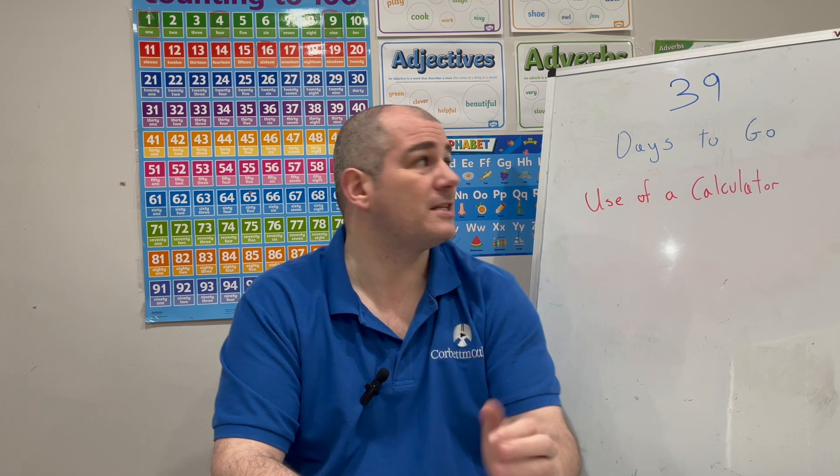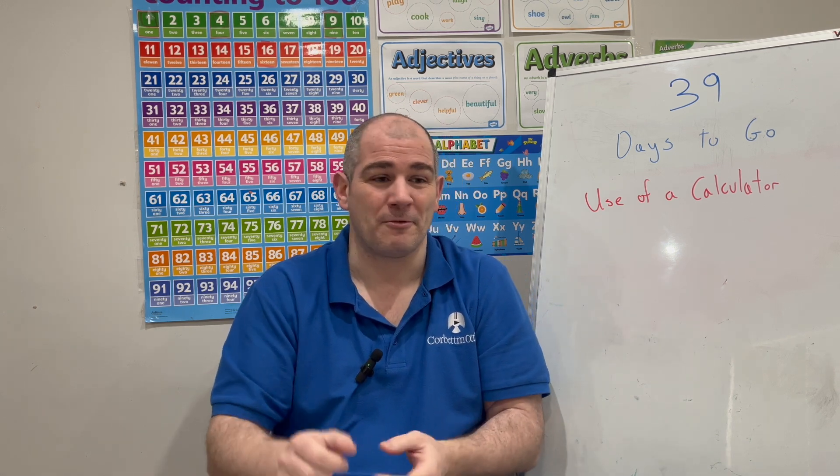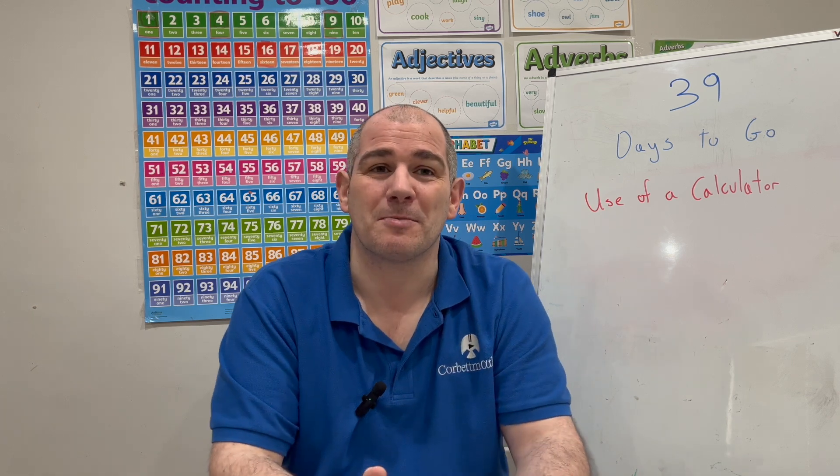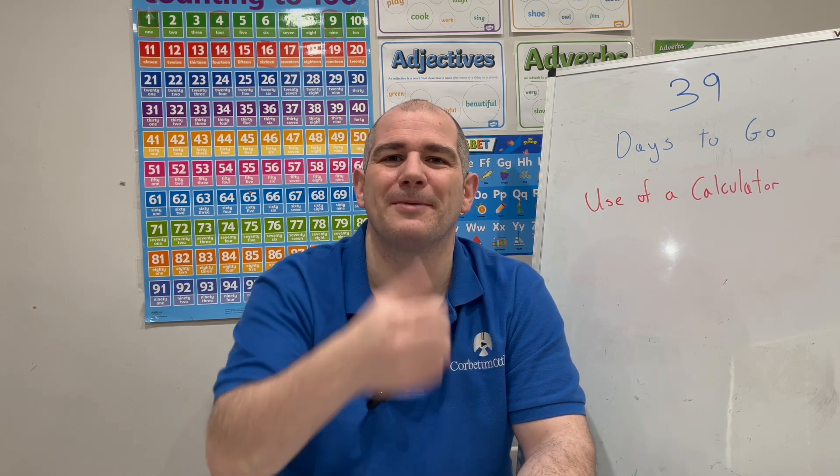In this video we've gone through the use of a calculator. With 39 days to go to your GCSE MAPS exam, it's important to bring your calculator to all your lessons and make sure you have it for past papers. I'd recommend having two calculators so you've got a spare in case one breaks. Make sure you're organised and prepared. Keep up the hard work, and I'll see you tomorrow for 38 days to go. Cheers, bye.